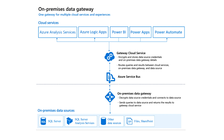On-premise data sources include SQL Server, SQL Server Analysis Services, other data sources, files, SharePoint, etc. This helps you connect your on-premise data sources to Power BI service or cloud services. When connecting with cloud services, it first decrypts data source credentials and connects to the data source, then sends queries to the data source and returns results to the gateway cloud service. On the cloud services side, it first connects to the gateway cloud service, encrypts and stores data credentials and on-premise data gateway details, routes queries and results between cloud services, the on-premise data gateway, and the data source, and then connects via Azure Service Bus.